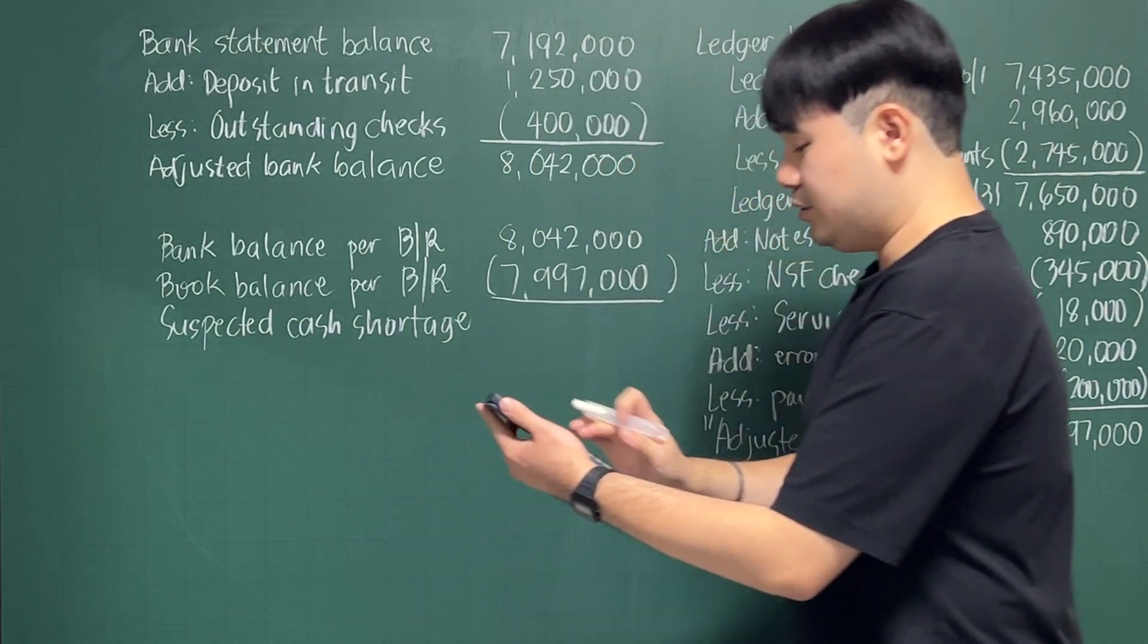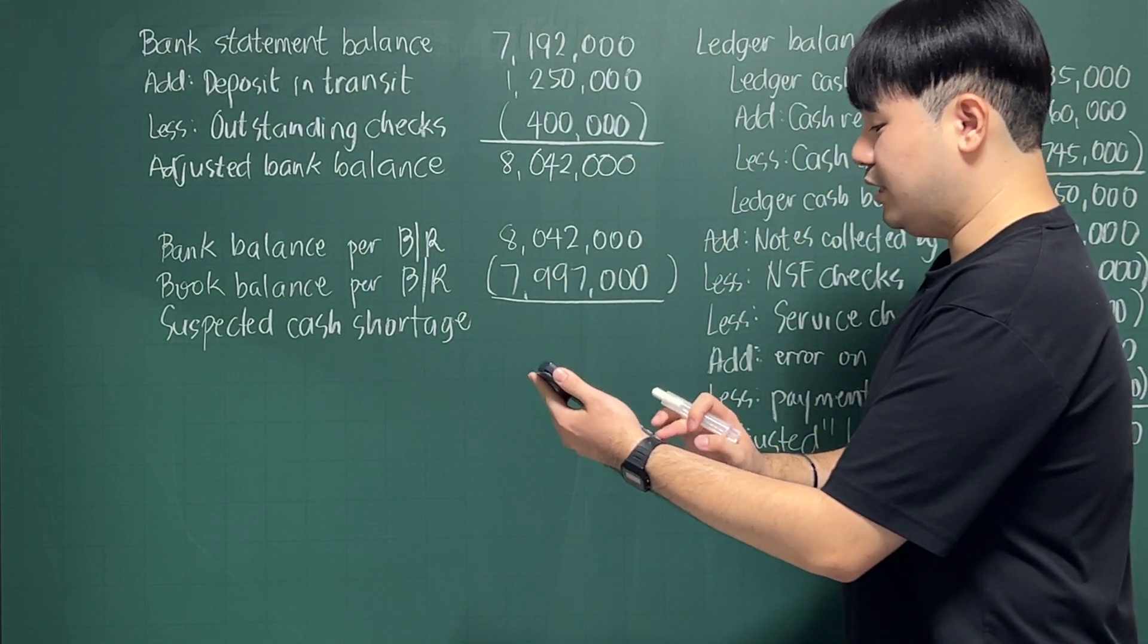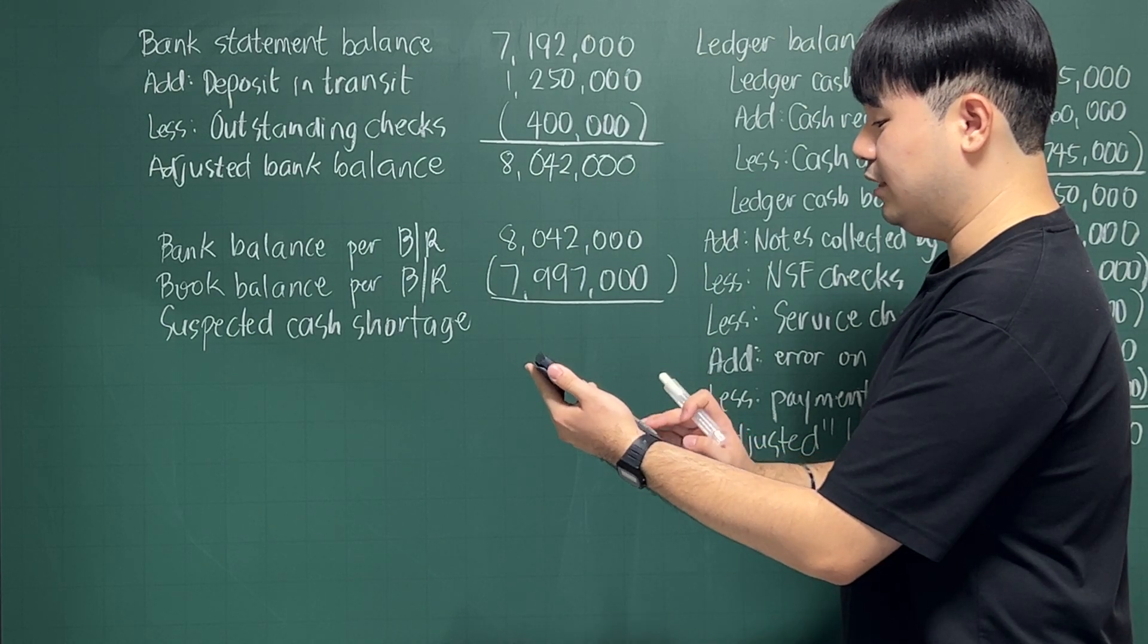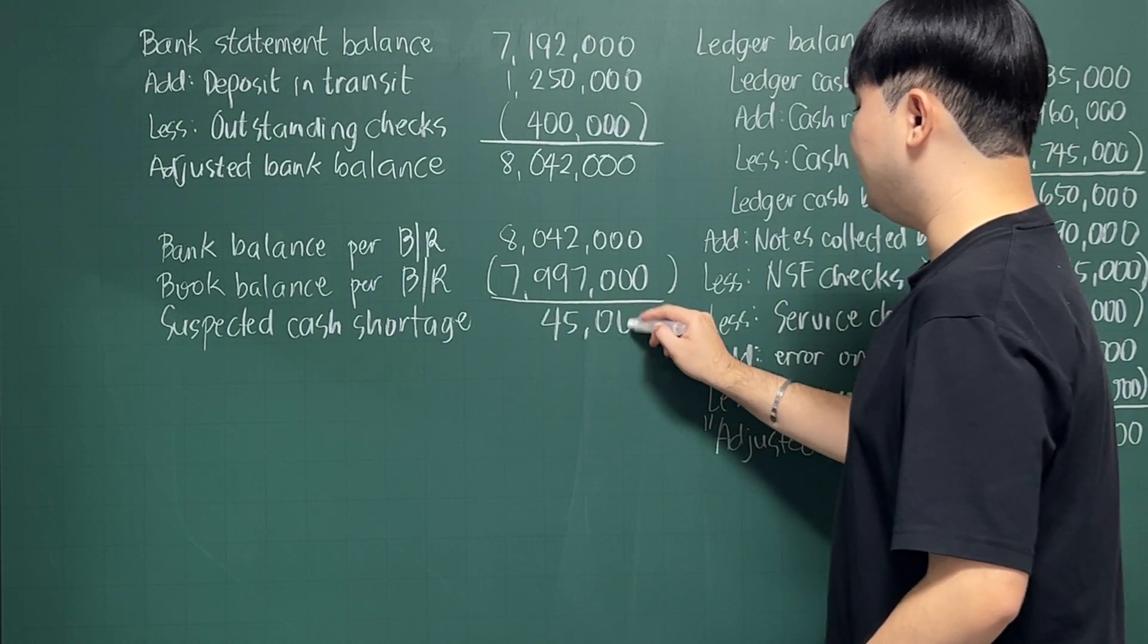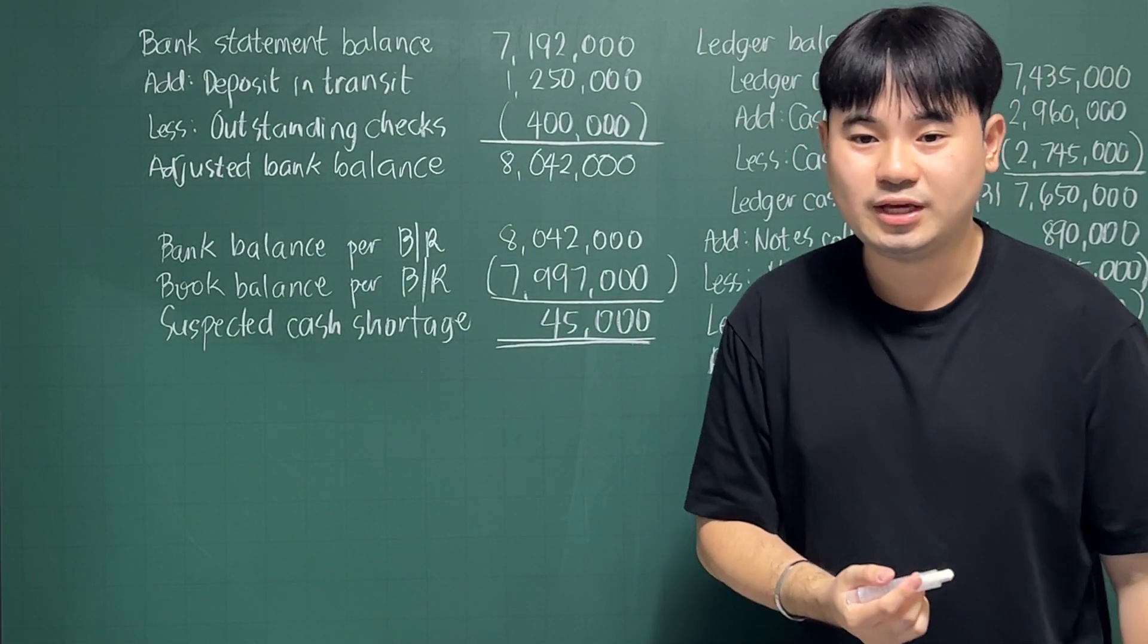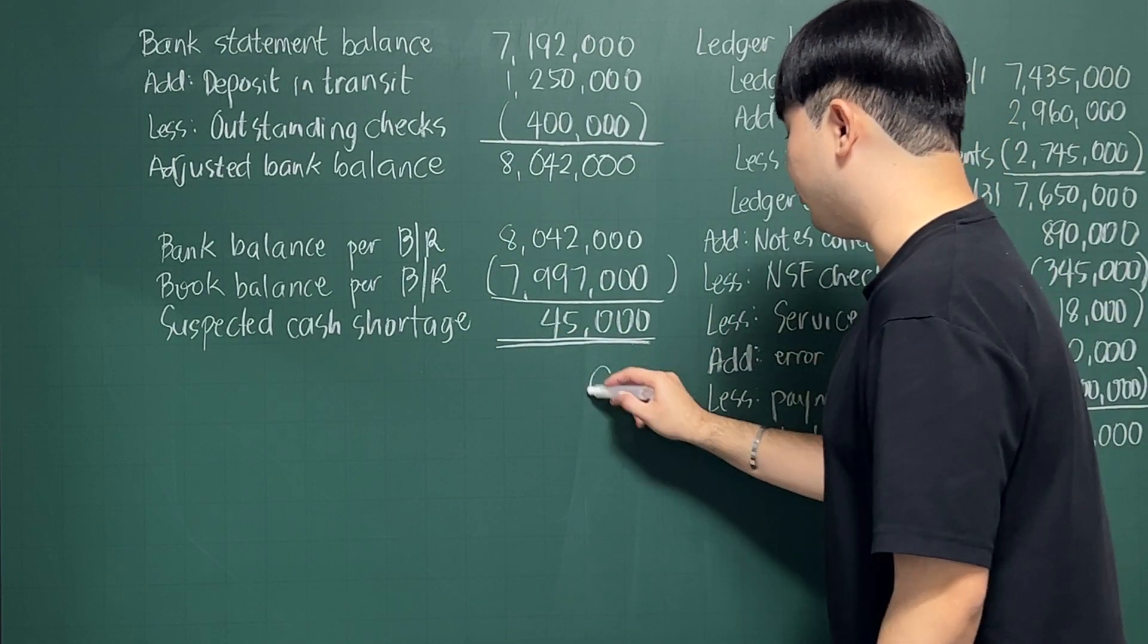So $8,042,000 minus $7,997,000. The answer is $45,000. And that is the amount of your suspected cash shortage. And in your choices, that is letter C.